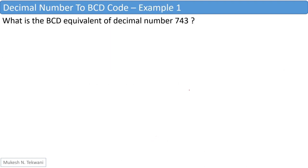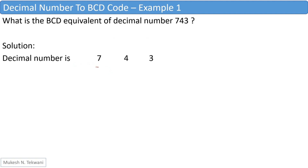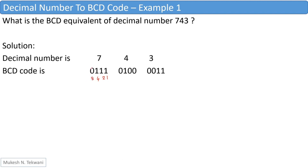Let us take the first example where we have to calculate the BCD equivalent of the decimal number 743. We'll start by writing the digits of our original number 743. Now each digit will be converted into its equivalent BCD code. So 7 is 0, 1, 1, 1. This is easy because each bit carries a weight — starting from the least significant bit: weight 1, weight 2, weight 4, weight 8. Where we do not have a bit, that value is cancelled. So this is 4 plus 2 plus 1, giving 7.